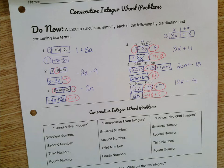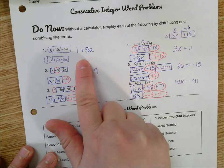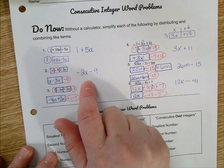Here are the answers to the do now. Number 1, 1 plus 5a or 5a plus 1. Number 2, negative 2x minus 9 or negative 9 minus 2x. Number 3, negative 2n.